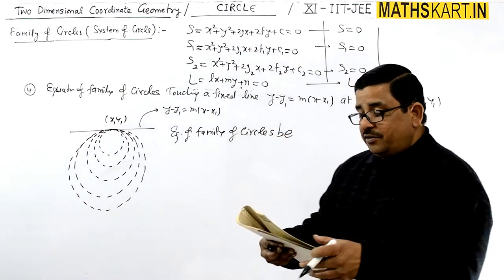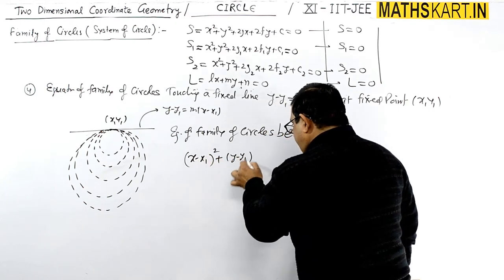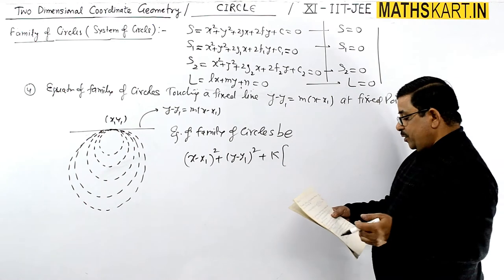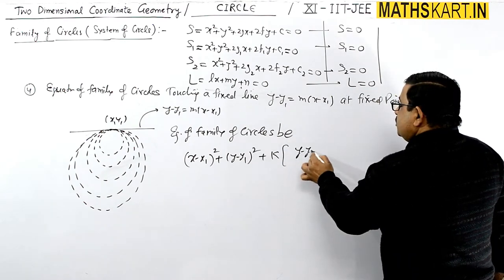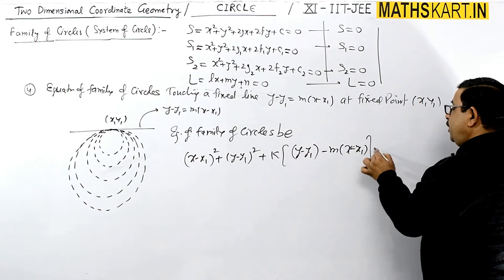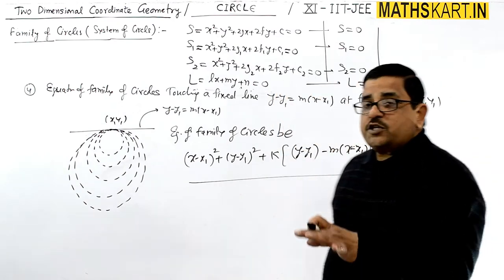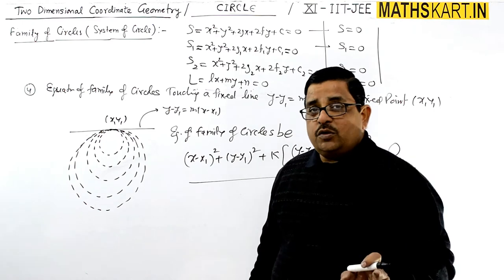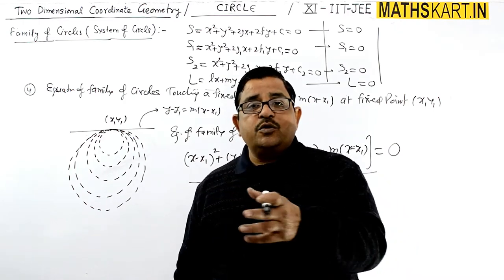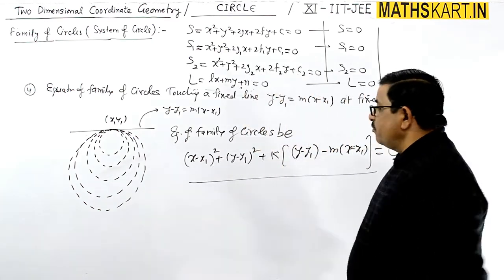The family of such circles is given by: (x - x1)² + (y - y1)² + k(y - y1 - m(x - x1)) = 0. So this is the equation giving the family of circles touching the fixed line at the fixed point x1, y1. All those circles are given by this family of equations.